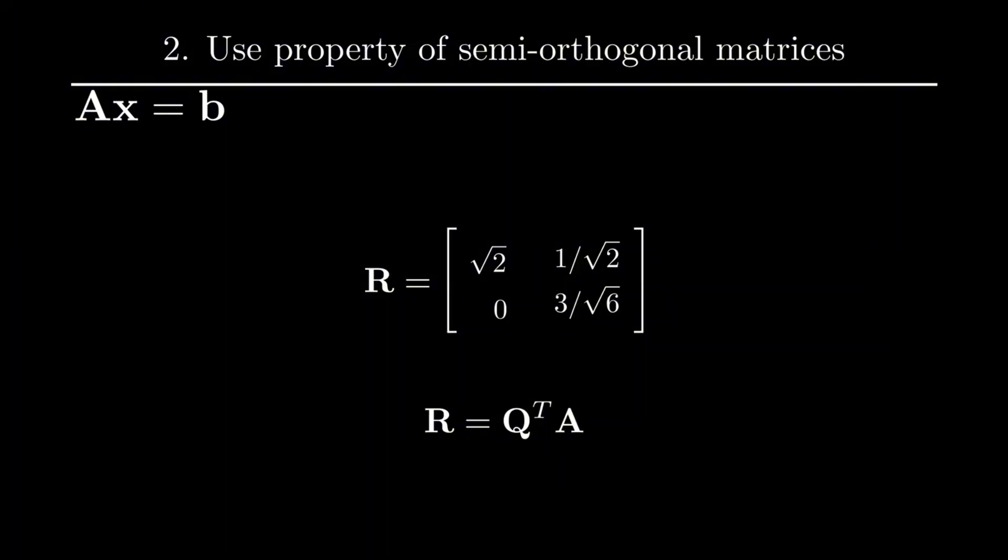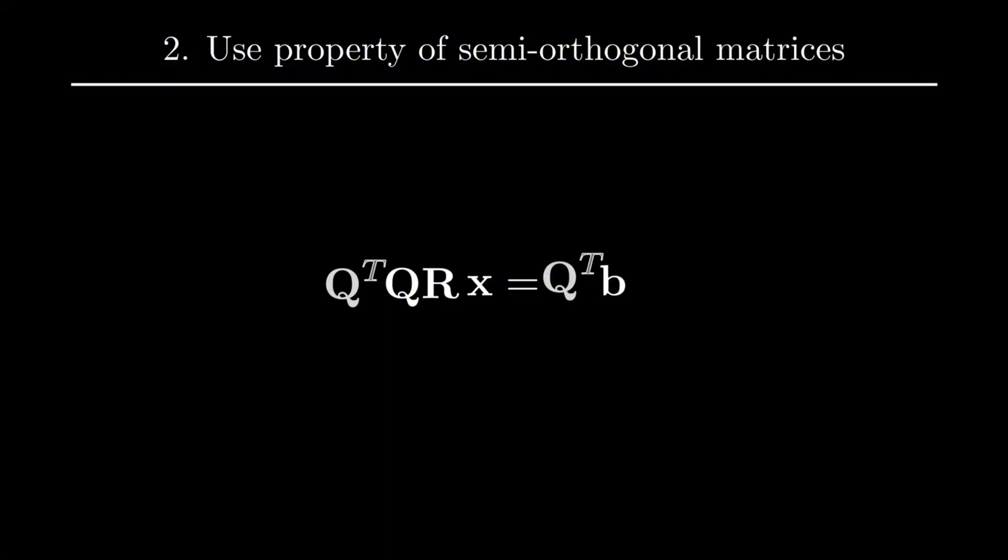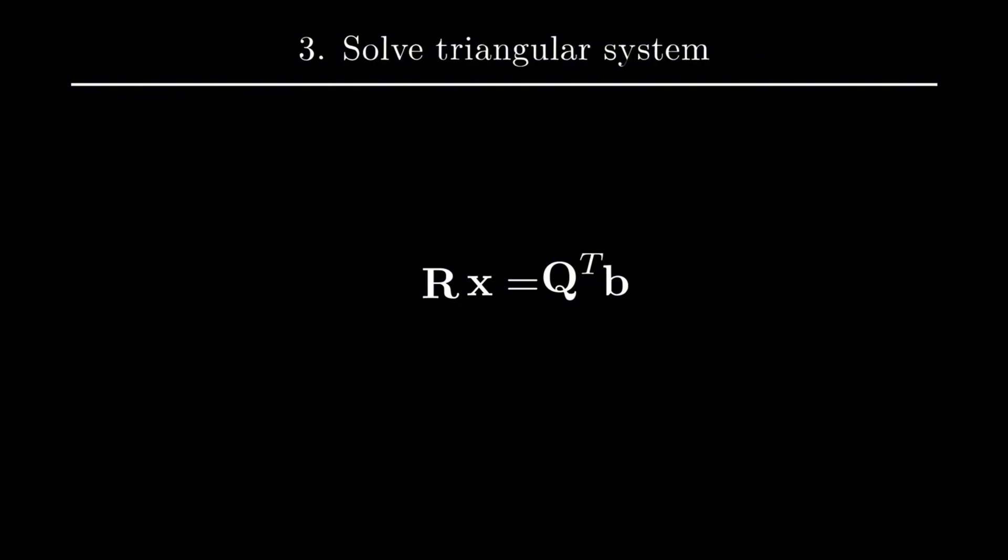Now if we want to use this factorization to actually solve the system, we can again take advantage of the properties of semi-orthogonal matrices. We can simply multiply both sides of the equation by Q transpose and get the following system: Rx equals Q transpose B. This resulting system is much easier to solve since R is a square upper triangular matrix, and we can simply utilize back substitution to find the values of x, y, and z.